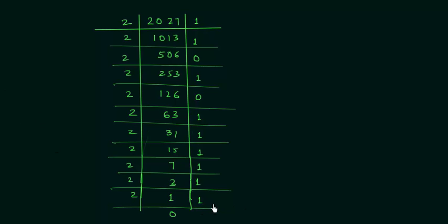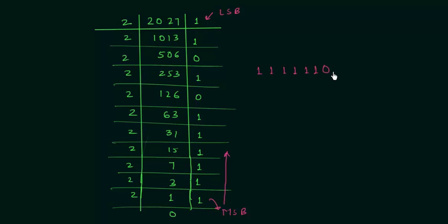This final 1 is the MSB — the most significant bit. Reading the remainders from MSB to LSB, the binary number is 11111110011. Counting the total number of 1s: we have 9 ones in total. So 9 is our answer for method 1.